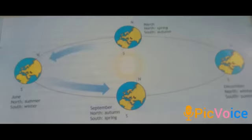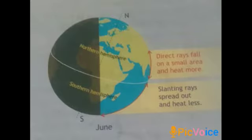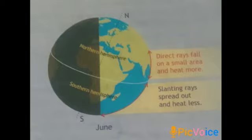When the weather continues for many days we call the time a season, and the season is not the same in all countries. The seasons in the northern hemisphere are the opposite of those in the southern hemisphere. In June, the northern hemisphere is tilted towards the sun, so more places of the northern hemisphere are in sunshine than in shade — the days are longer than the nights, and more sunshine means more heat. So the northern hemisphere becomes warm and has summer.